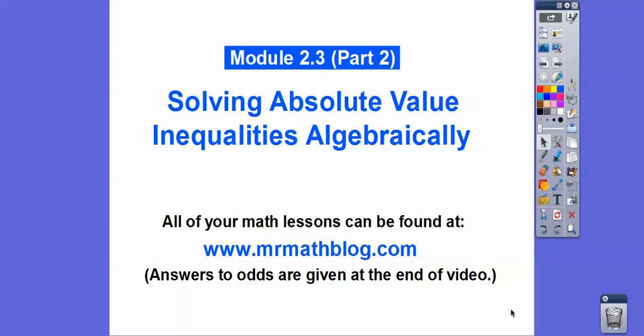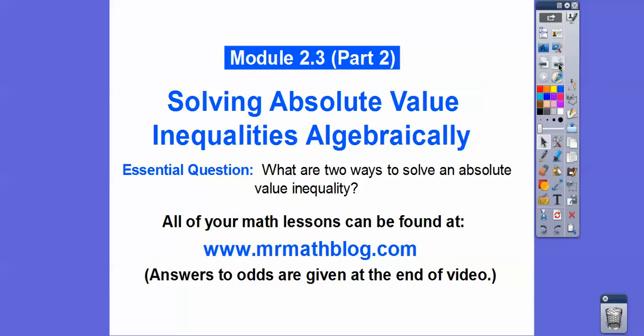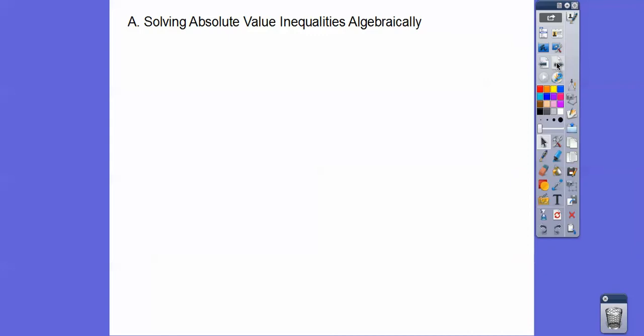Hey folks, this lesson we're going to solve absolute value inequalities algebraically. In the last lesson we did it graphically, and so here we're going to solve them algebraically. The question is: what are two ways to solve an absolute value inequality? We showed the first way in the last lesson — graphically — and this one's going to be algebraically. I'm going to include the answers to our assignment at the end, to the odds anyway.